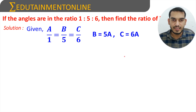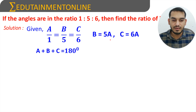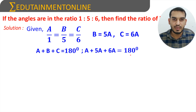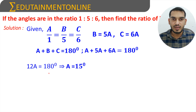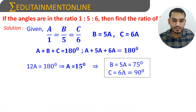Since the sum of angles in a triangle is 180°, we write a + b + c = 180°. Substituting b = 5a and c = 6a, we get a + 5a + 6a = 180°, so 12a = 180°, giving a = 15°. Therefore b = 5 × 15° = 75° and c = 6 × 15° = 90°.